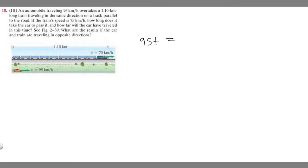Set it equal to the velocity of the other car. In this case it's 75, then multiply it by t. Then add the distance between the two. Since they're traveling in the same direction, we take the distance between them, which is 1.1 kilometers.